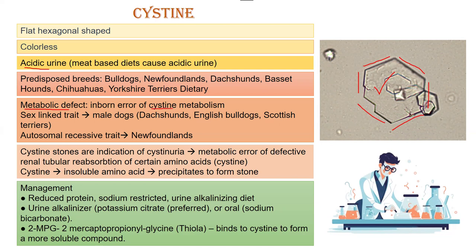Cysteine, as you know, is an amino acid, and if there is any metabolic disturbance it leads to cysteine crystals. This defect is sex-linked when it comes to Dachshunds, English Bulldogs, and Scottish Terriers.